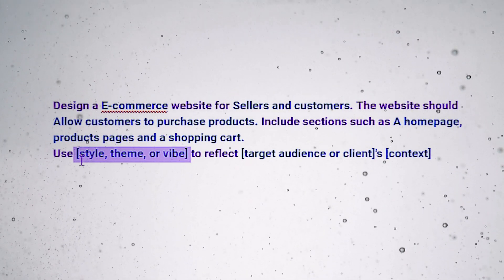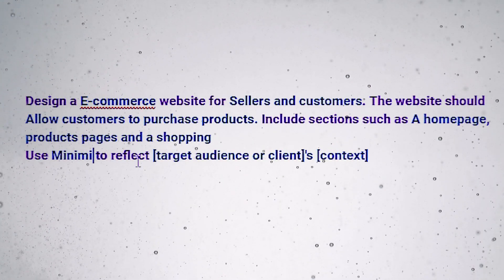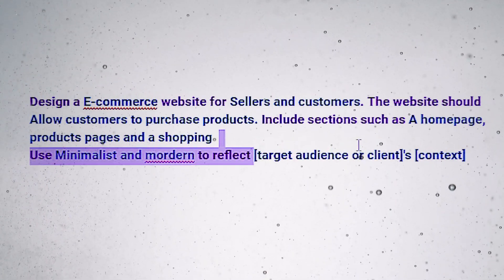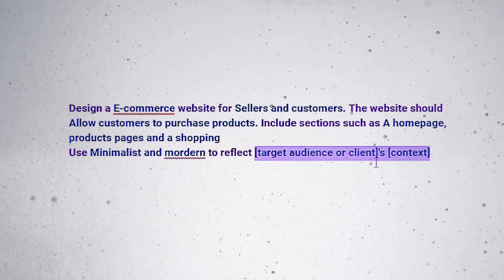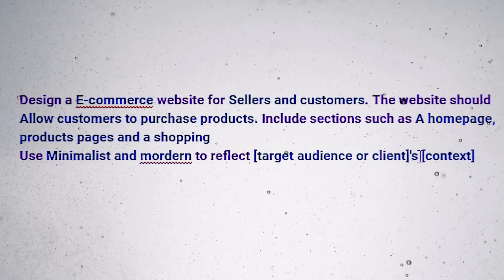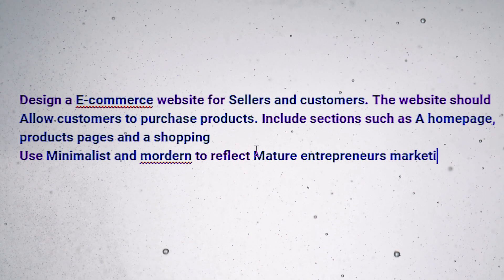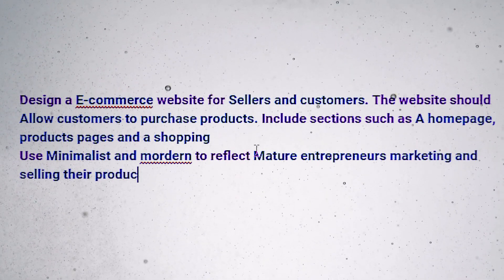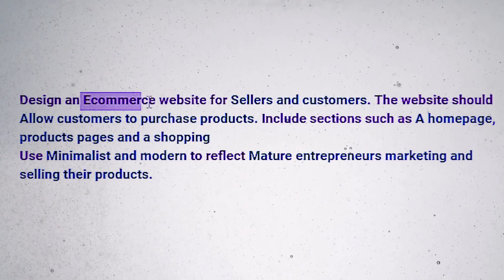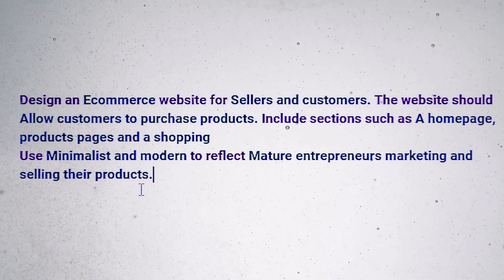Style, theme, or vibe is the overall look and feel of your website. For example, you might write 'minimalist and modern' if you want your website to have a clean and contemporary aesthetic. In the target audience or client's context, you'll write background information that will help the AI understand your design vision — for example, 'young and trendy audience's love for fashion' for a fashion brand targeting a younger demographic, or 'older and more mature audience's passion for travel' for a travel blog for a retired couple. You can always make it more detailed to get a much better and accurate result.